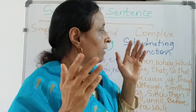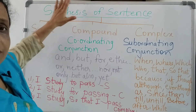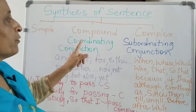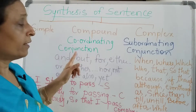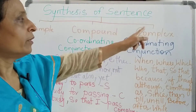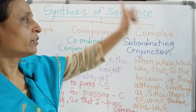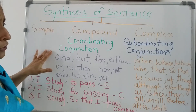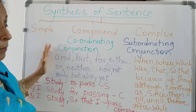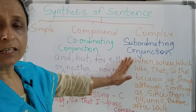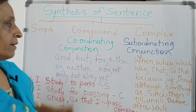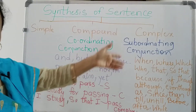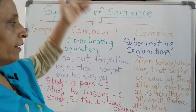So now let us see what synthesis of sentences means. Three types of sentences: simple, compound, complex. If you put a coordinating conjunction, then it is a compound sentence. If you put a subordinating conjunction, it is a complex sentence. You should know what the coordinating conjunctions are to make a compound sentence: and, but, for, either, or, neither, nor, not only but also, yet — these are coordinating conjunctions.